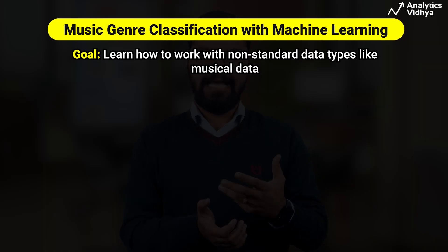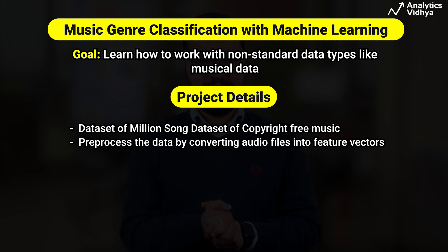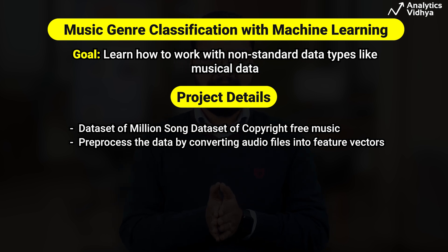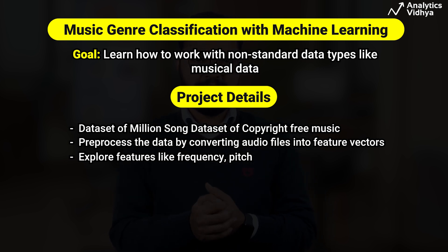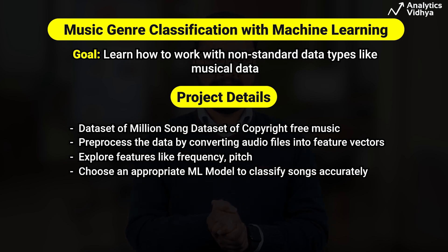This project helps you learn how to work with non-standard data types like music data. We use the Million Song Dataset which contains copyright-free music. We pre-process the data by converting audio files into feature vectors used as input, then explore features like frequency and pitch. You can classify the songs using these features, and finally choose an appropriate machine learning model to classify the songs accurately. You will learn how to classify such data based on different features.